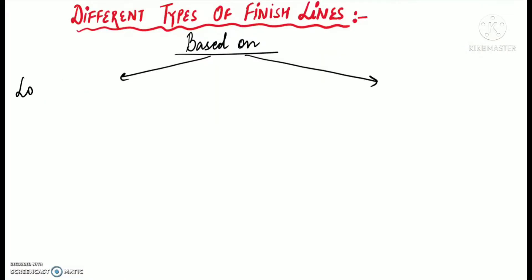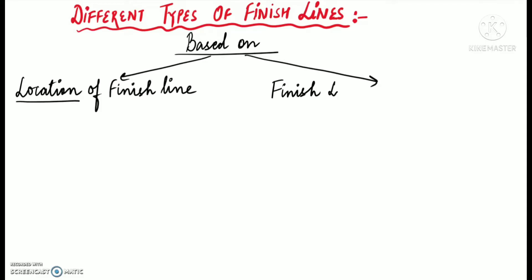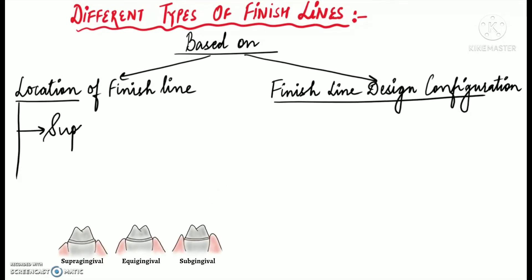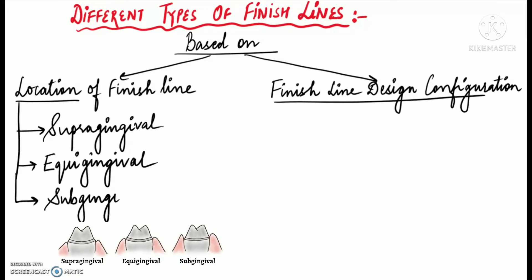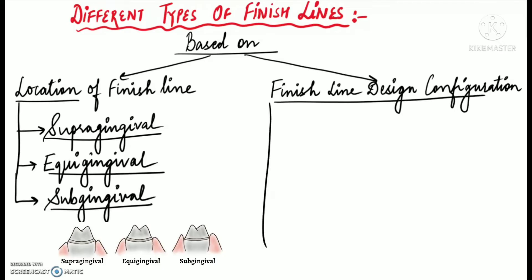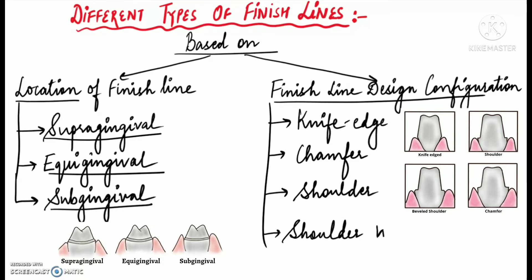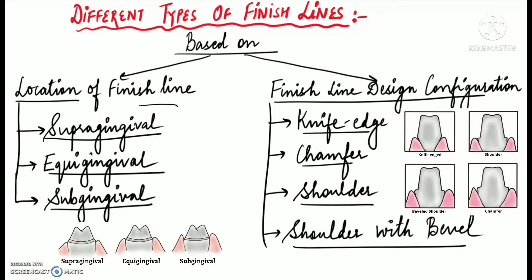So there are different types of finish lines based on the location of the finish line and depending upon the finish line design configuration. The different types based on location are supra-gingival, equi-gingival, and sub-gingival, which we discussed in our previous video. And the different types based on design are knife-edge, chamfer, shoulder, and shoulder with bevel, which we are going to discuss in today's video.